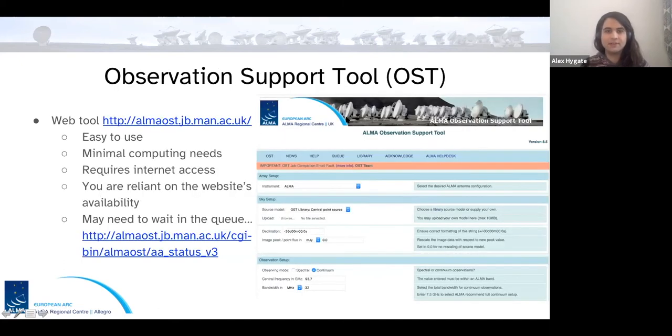So the first tool I'm going to look at is the observation support tool. As I said, it's a web tool. And here's the website where you can find it. It has the advantage that it's easy to use, has minimal computing requirements for your behalf. Any computer with a web browser can use it. It's even supposedly works on a tablet or a phone, but I've never tried it myself. Obviously, it does require internet access, and you're reliant on the website's availability. So if it goes down, you can't simulate. And there's a queue. So obviously, if you have your own computer and you're simulating, you can use the resources you wish. But here, there's one computer that's been your one computing service that's being used by everyone. And so you need to wait. And this is something to bear in mind as you come closer to the proposal deadline is that more and more people may be using it. So the earlier you get in with your requests, the better it will be.